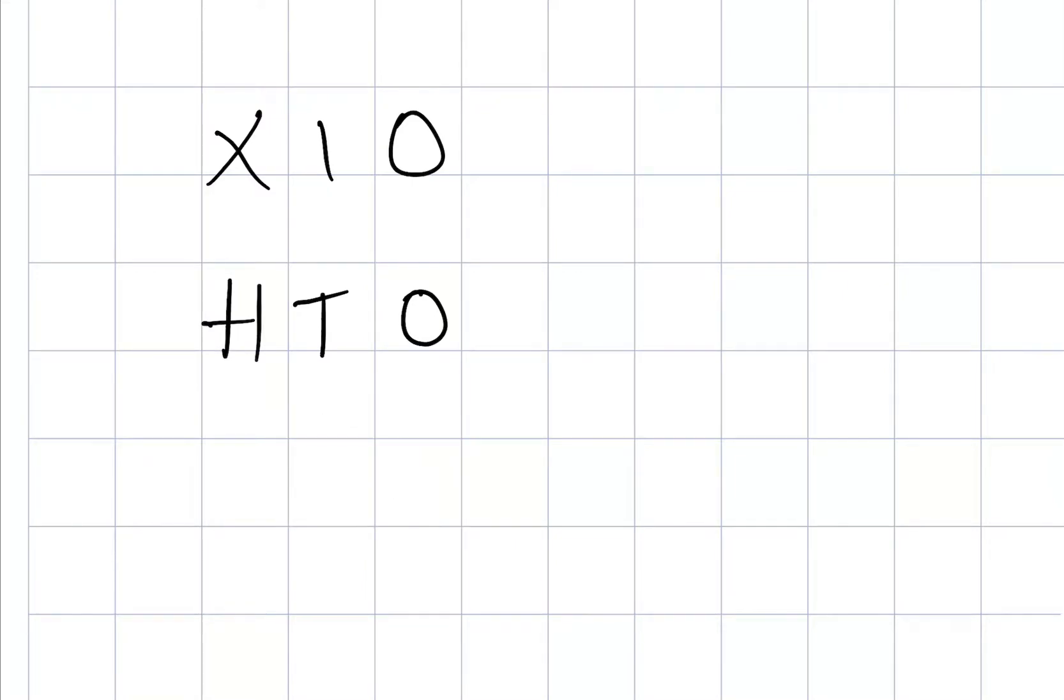Now let's have a look at a 2-digit number, 32. To make 32 ten times bigger we move the digits again one place to the left, keeping them both together because they are a pair. To stop them from sliding back down into the ones we add a placeholder. So 32 made 10 times bigger is 320.